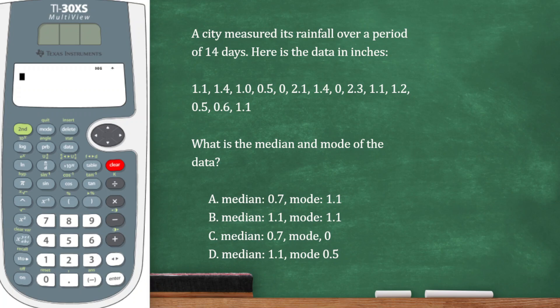A city measured its rainfall over a period of 14 days. Here's the data in inches. What is the median and the mode of the data? The median is the middle, but we can't just pick the middle if the numbers are not ordered. So we have to put them in ascending or descending order. Let's go ahead and do that, crossing out numbers as we go to make sure we don't forget one.